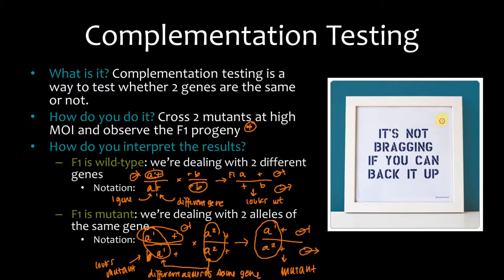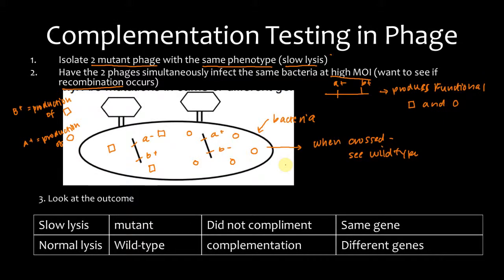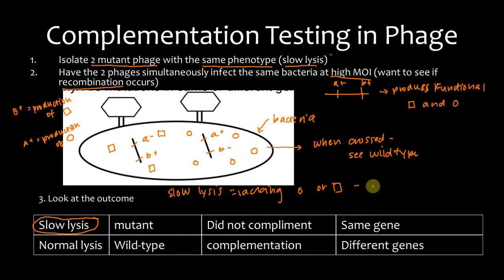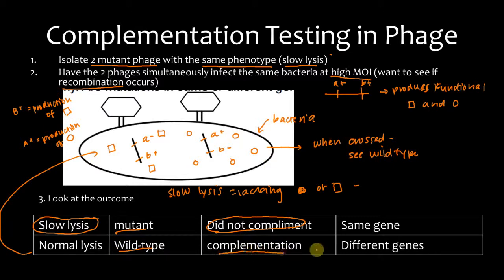I forgot to explain this — complementation testing: you can remember it as looking for same vs. different genes. If they complement one another, we're dealing with two different genes. You want to complement someone else — you don't want to complement yourself. So if they complement, they are different genes. The big takeaway: memorize this table and you'll be fine.